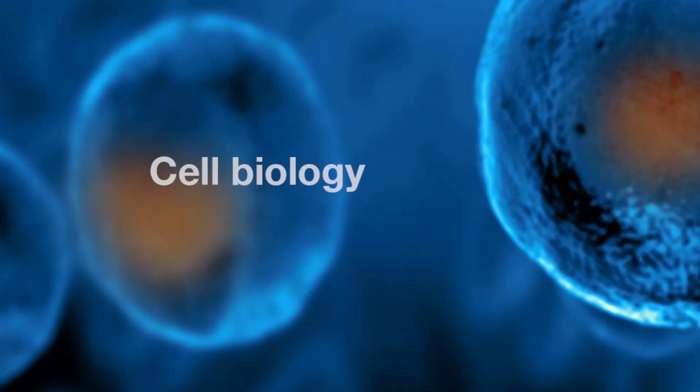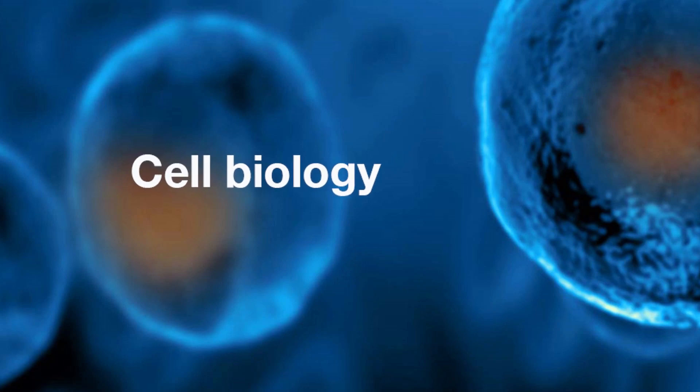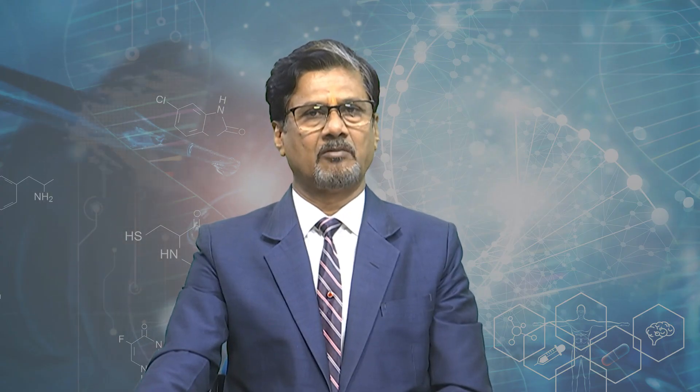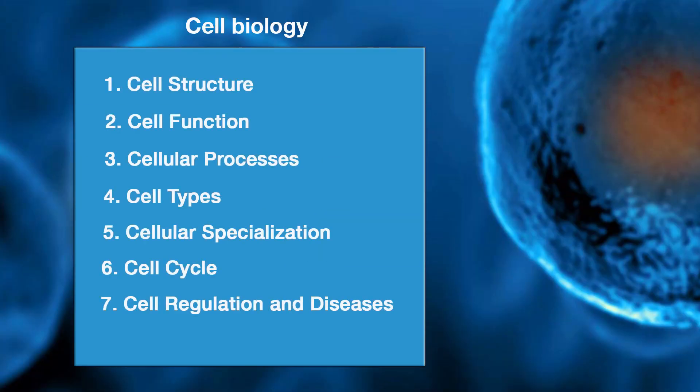In the basic biology part 1, you have learnt about cell biology. Our experts covered the following points: cell structure, cell function, cellular processes, cell types, cellular specialization, cell cycle, and cell regulation and diseases.